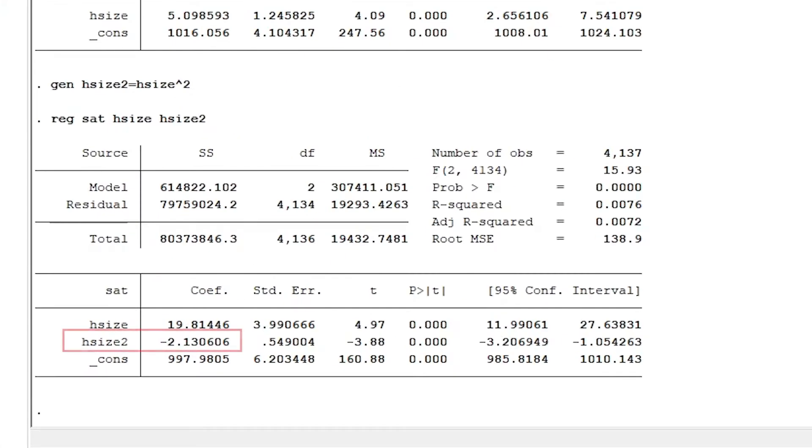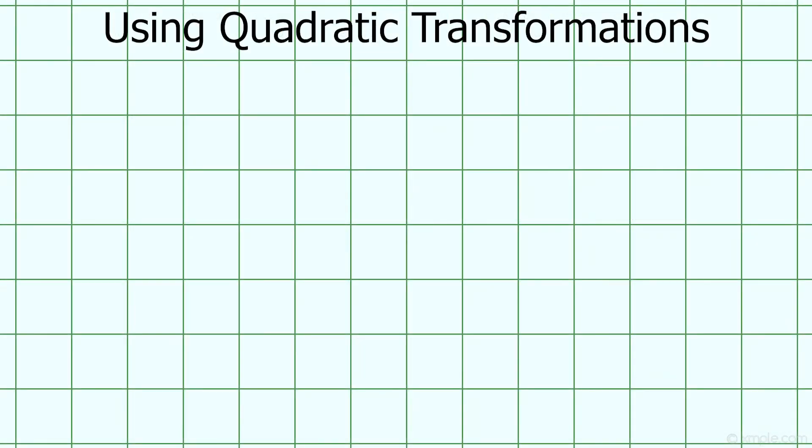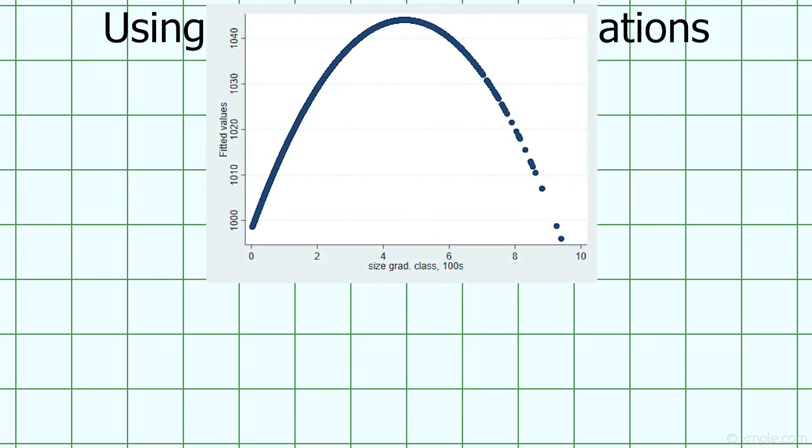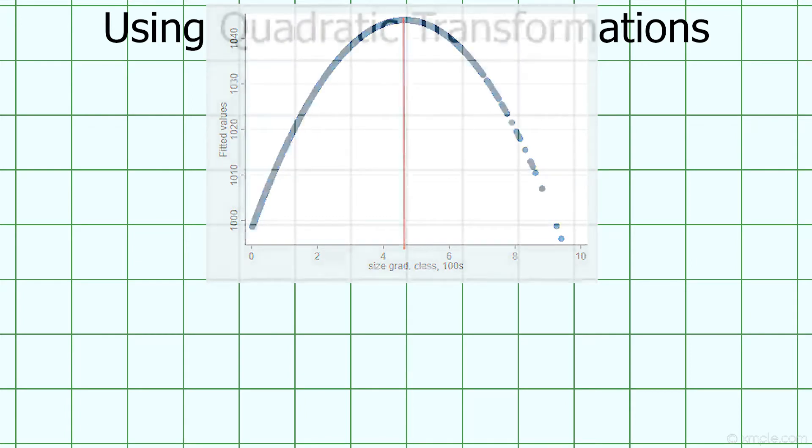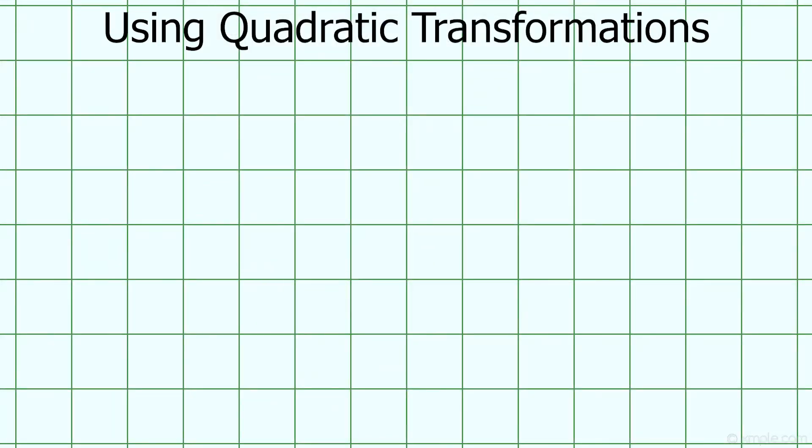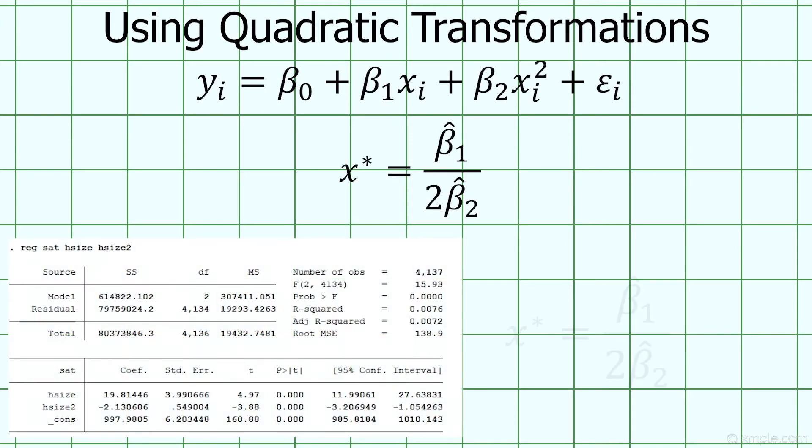Notice that the coefficient on the quadratic term is negative, indicating that the parabola opens downward, as we suspected. Taking a look at a fitted values plot, we can see that our model has a turning point where additional students stop helping and start hurting a school's average SAT scores. For any quadratic regression, we can find the value of this inflection point using this formula. In this regression, the sign of the effect switches from being positive to negative at about 500 students.